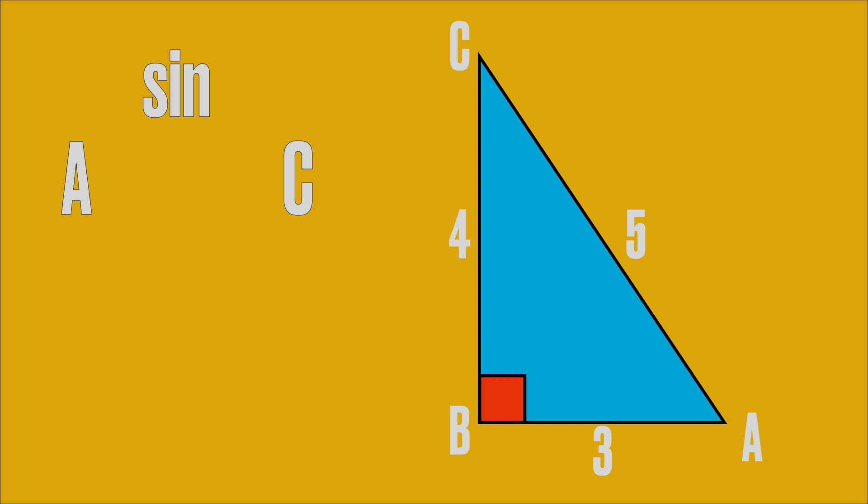All right, so in this case we are trying to figure out the sine of A and the sine of C. So remember, SOH CAH TOA. So sine is opposite over hypotenuse. So from A, the opposite side is 4, so I'm going to write 4 over... and the hypotenuse is 5. And from C, let's see, from C the opposite side is 3, so we're going to say 3 over 5.